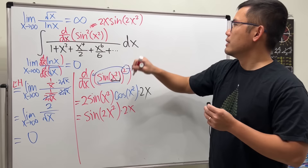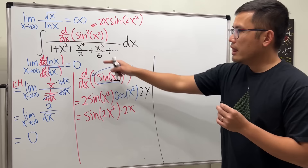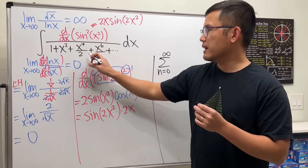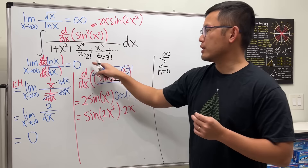Now we have the infinite series. Let's put this into summation form: the summation from n = 0 to infinity. Notice that 2 is the same as 2 factorial and 6 is the same as 3 factorial, so we're looking at 0!, 1!, 2!, 3! and so on — that's n! on the bottom.